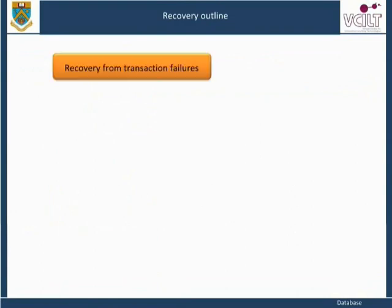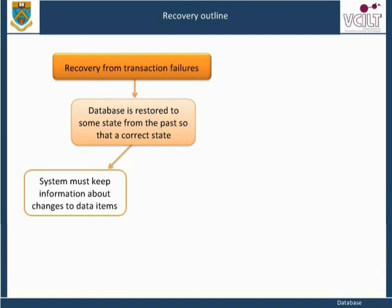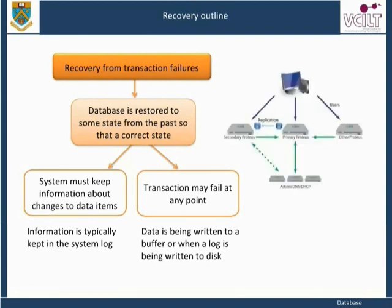Recovery outline: recovery from transaction failures usually means that the database is restored to some state from the past so that a correct state, close to the time of failure, can be reconstructed from that past state. To do this, the system must keep information about changes to data items during transaction execution, outside the database — typically kept in the system log. It is important to note that a transaction may fail at any point, for example when data is being written to a buffer or when a log is being written to disk. Our recovery mechanisms must be able to cope with the unpredictable nature of transaction failure. Significantly, the recovery phase itself may fail; therefore, the recovery mechanism must also be capable of recovering from failure during recovery.